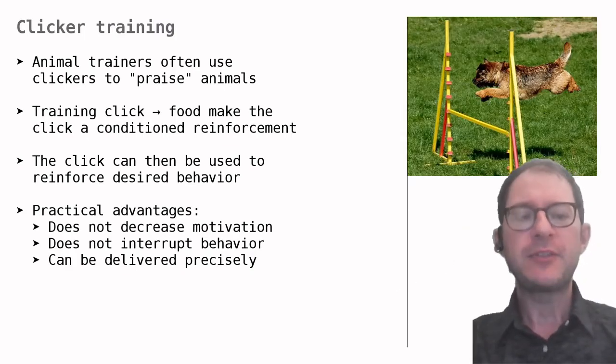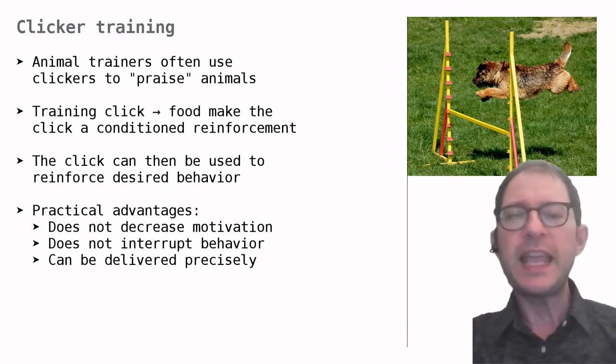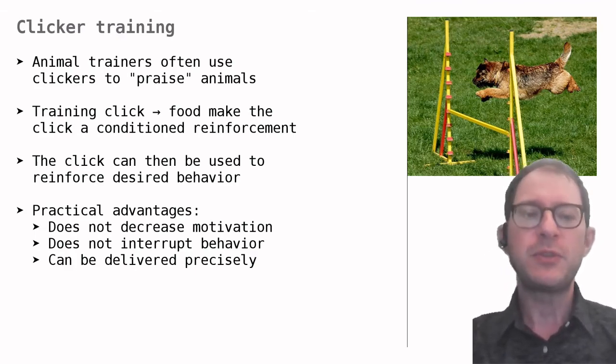The second advantage that a clicker can offer is that it can be delivered without disrupting ongoing behavior. The dog in the picture, for example, is running an obstacle course. If it jumps correctly, we want it to continue to the next obstacle, not to come back to us to get its treat. If we use the clicker, we can reward the dog without interrupting what it's doing. One can also use words like yes or good doggy, but these are also used in everyday life outside of a training context and can be less effective than the very distinctive sound of the clicker.